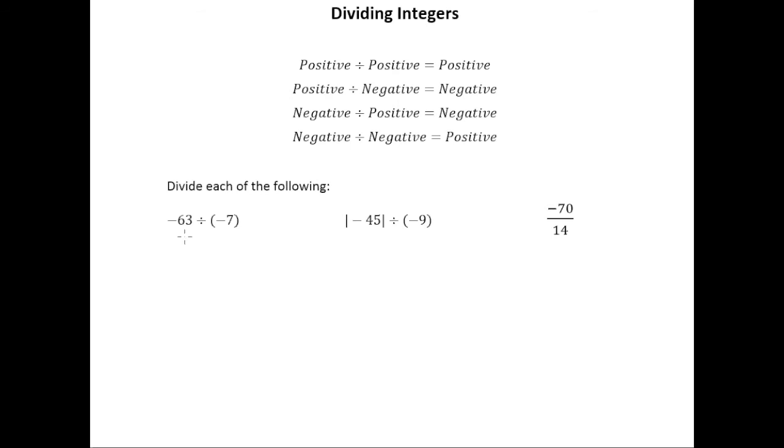So let's take a look at this example. We've got negative 63 divided by negative 7, so which of those scenarios are we in? Well of course we're in the fourth scenario here. We have a negative divided by a negative so the answer will be positive, and then 63 divided by 7 we should know off the top of our heads because that's one of our division facts that we need to have memorized. So the answer there is positive 9.